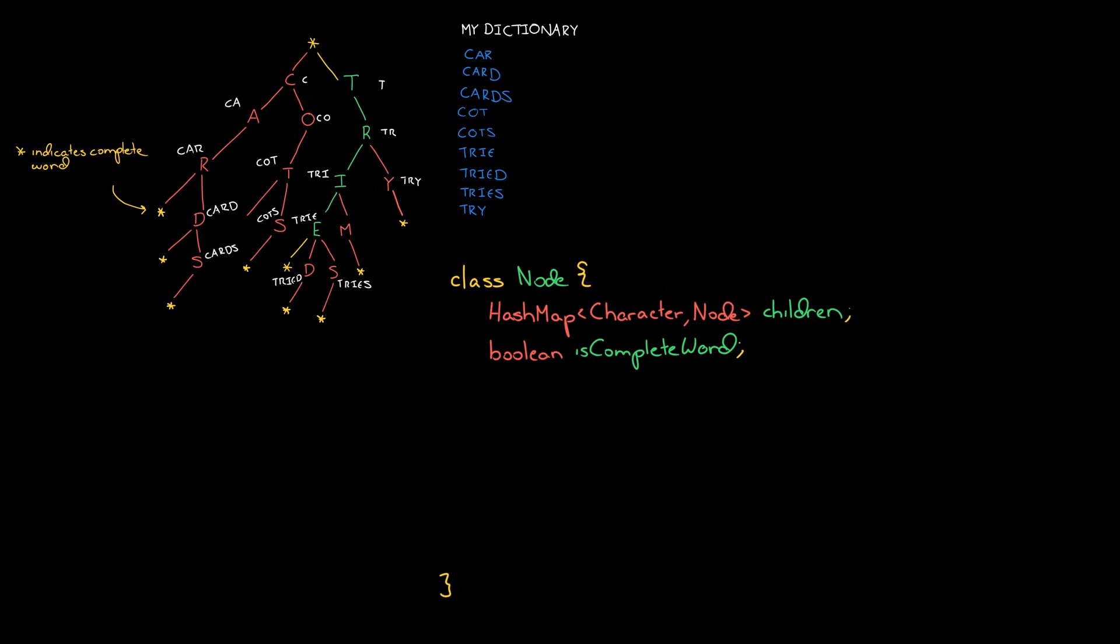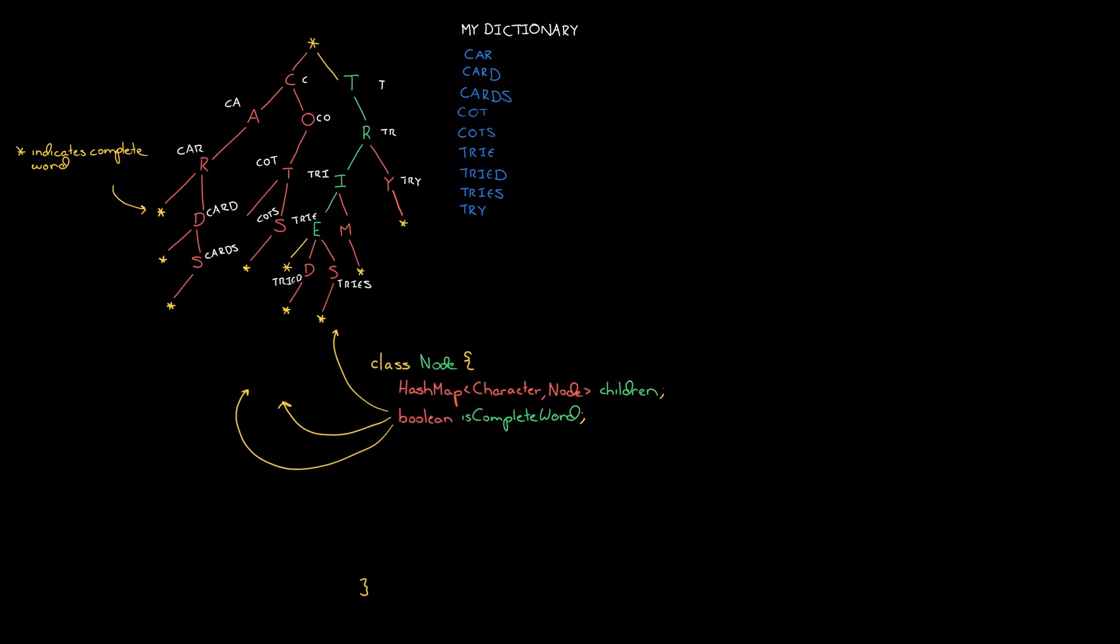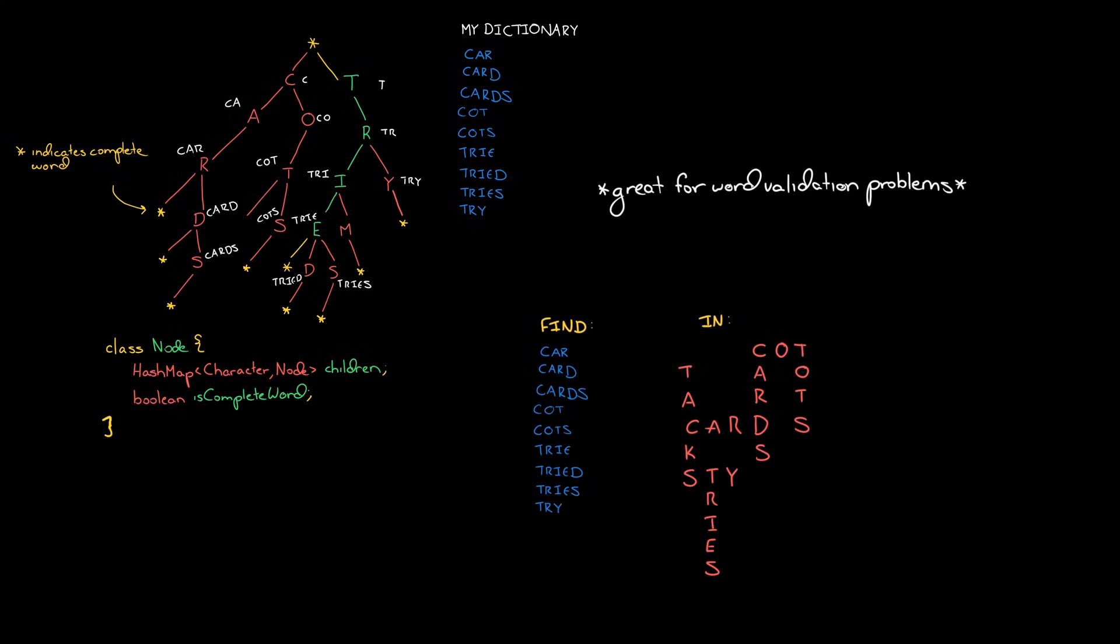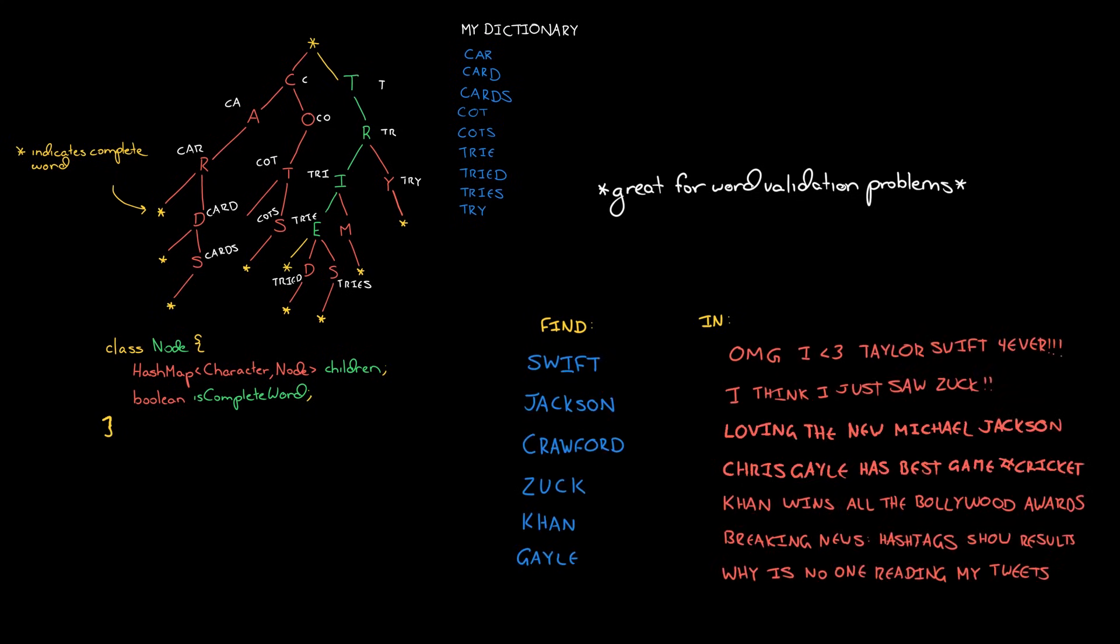We see tries in a lot of problems. If you're in an interview and you get a question that has some sort of word validation to it - walk through this scrabble board and find all the words, or given this list of strings, find all celebrity names - when you see something that has some sort of word list validation, think about whether or not a trie might be useful.